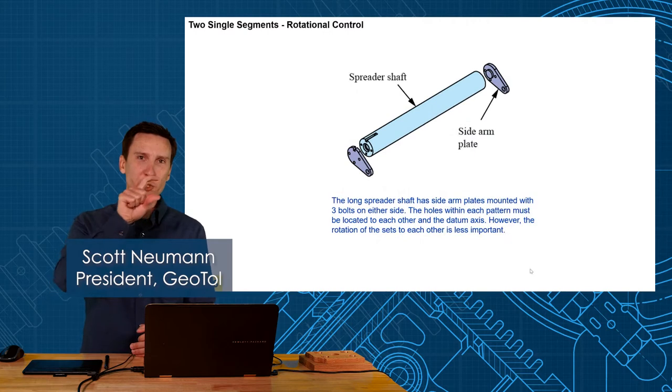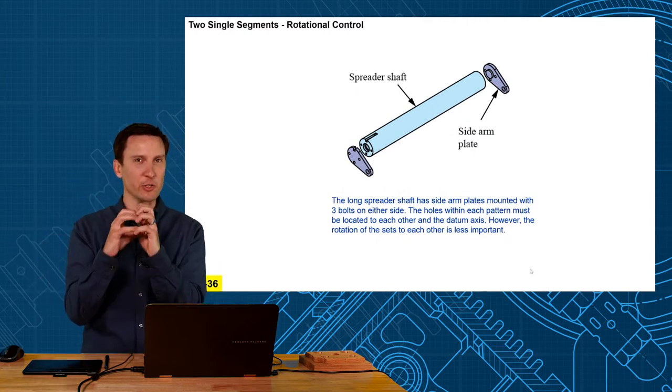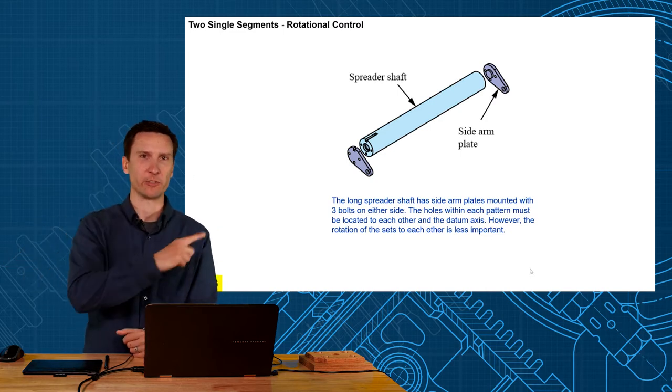This video shows how we can use two position segments to refine the location between features when you don't care about the rotation to another side.